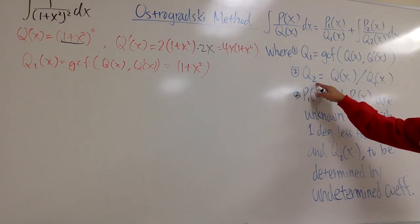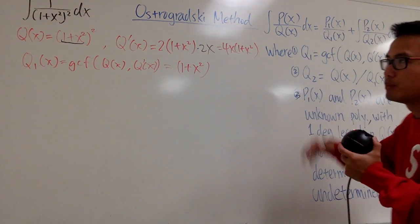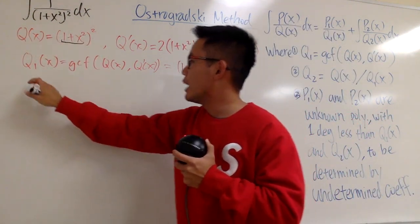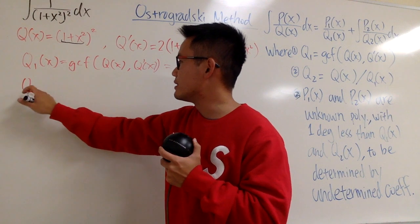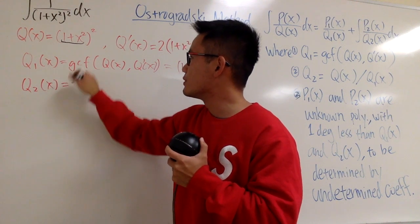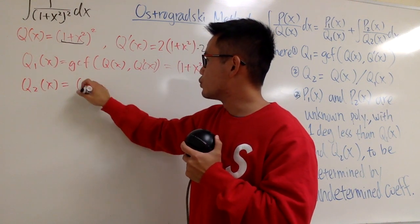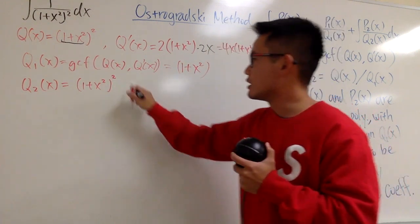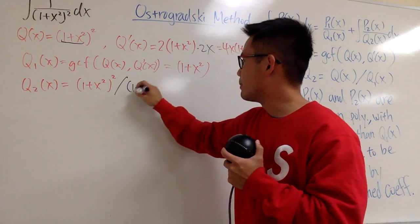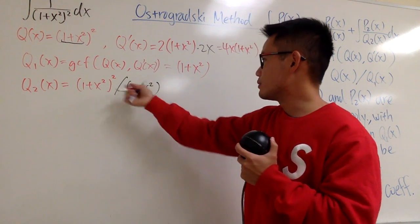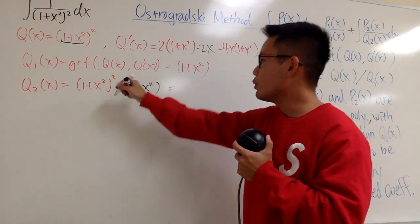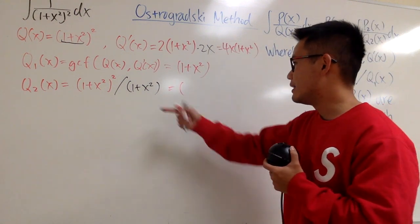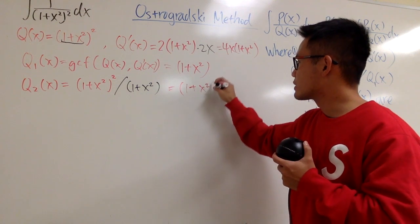Next, we'll have to figure out q2. q2 is just pretty much the remaining part. If you break down the original, which is that, I will just write this down as well. You can look at this as q2 of x equals to the original, which is 1 plus x squared squared, and then divide it by q1. So divide it by parentheses 1 plus x squared, and you know the power cancel out. We have one more left. So it just happened to be q1 and q2 are the same, and that is 1 plus x squared.